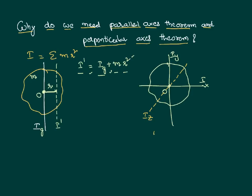Using the formula I_z = I_x + I_y, this theorem is called the perpendicular axis theorem. So why do we need a perpendicular axis theorem? When you know the moment of inertia of the body about two perpendicular axes passing through the same point in the same plane, we can calculate the moment of inertia about another perpendicular axis that is perpendicular to the plane using the perpendicular axis theorem. The moment of inertia of any body about a point equals the sum of the moment of inertia about two perpendicular axes passing through the same point in the perpendicular plane.